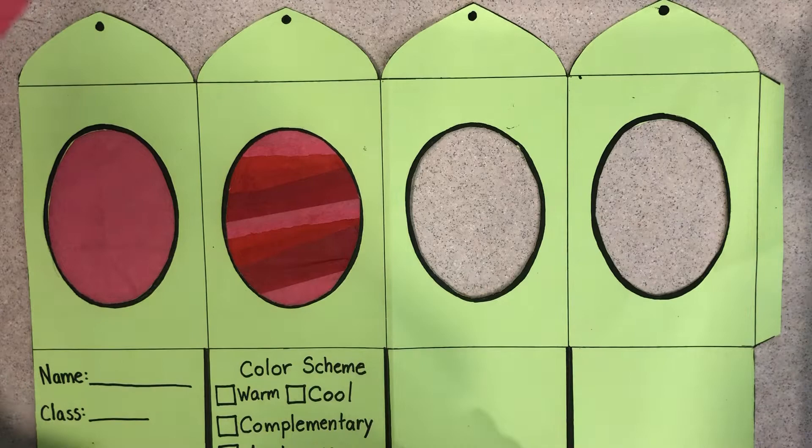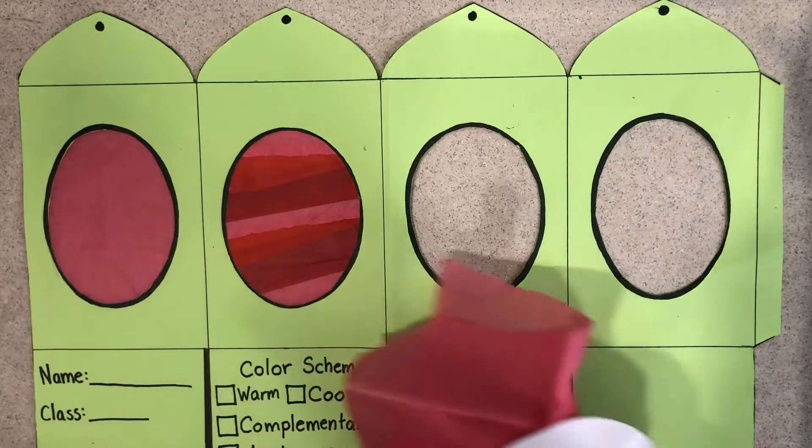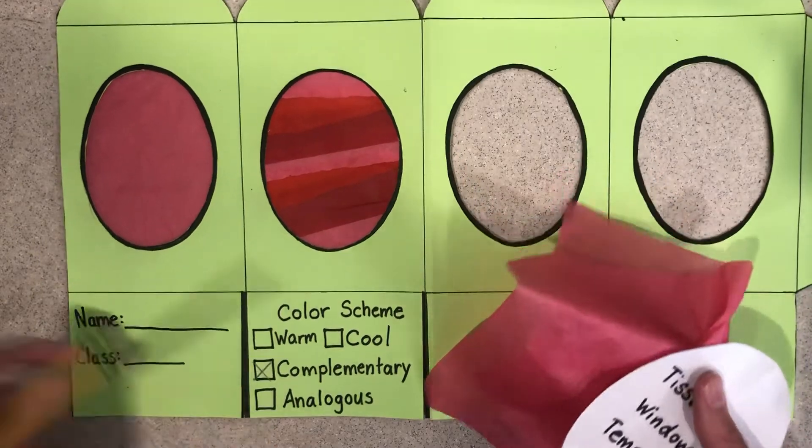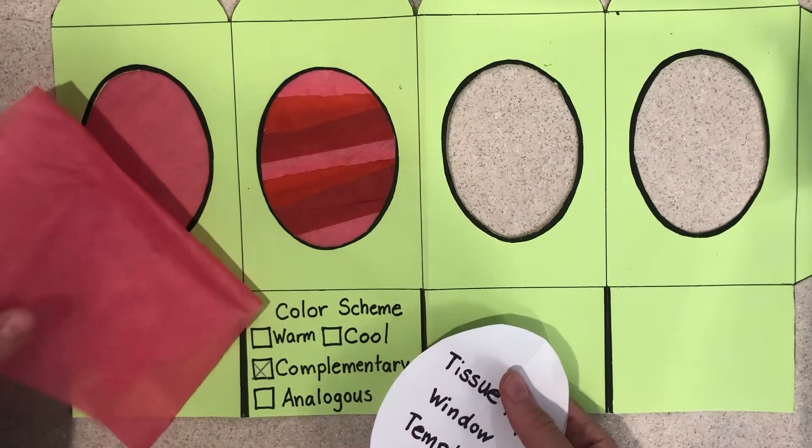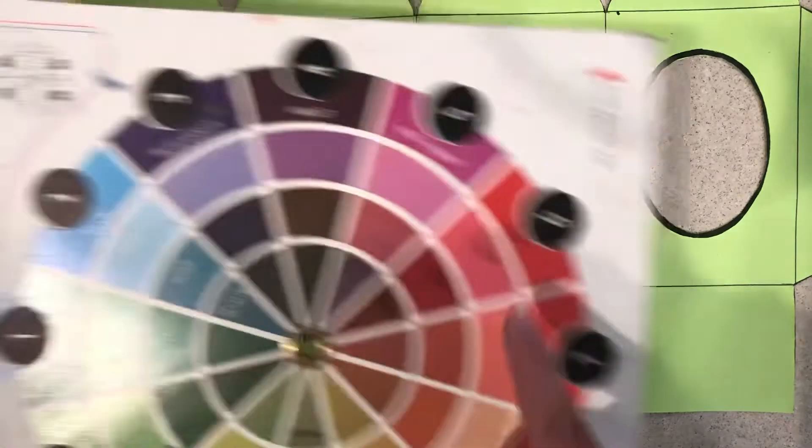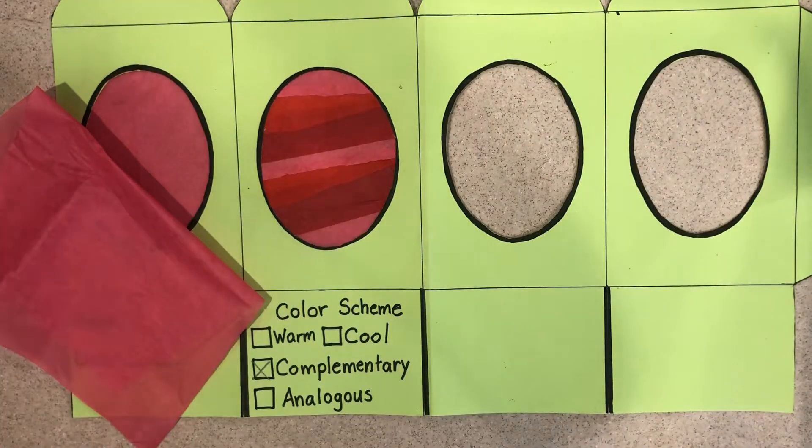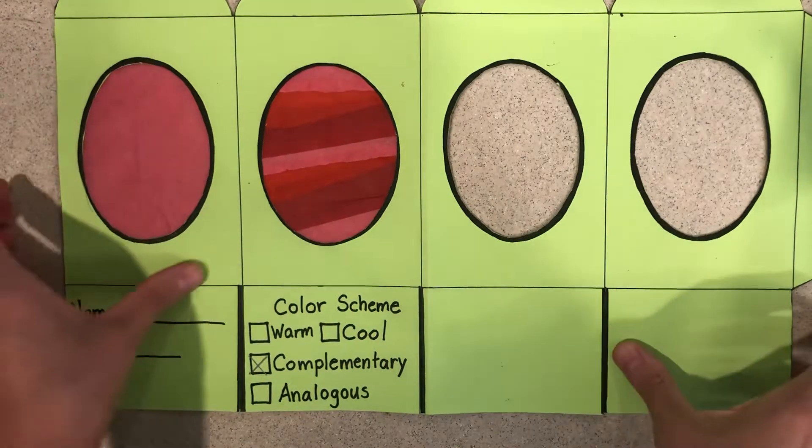Like I said before my color scheme that I had chosen was complementary. That's across from each other on the color wheel. I picked green and red. Now a tint of red can also be pink. So I've grabbed some red and pink tissue paper.